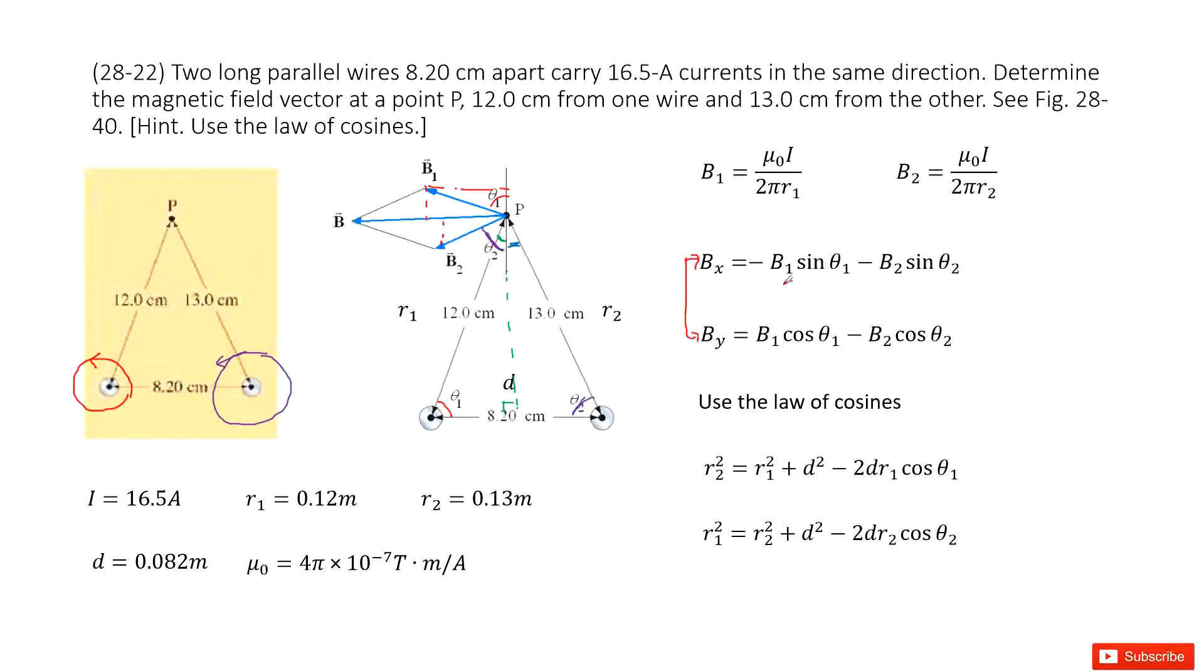So it looks like we must know B1 and B2. That is easy, because we can get the magnetic field from a straight wire very easily by these two functions. Another thing, we need to know the angles theta 1 and theta 2.